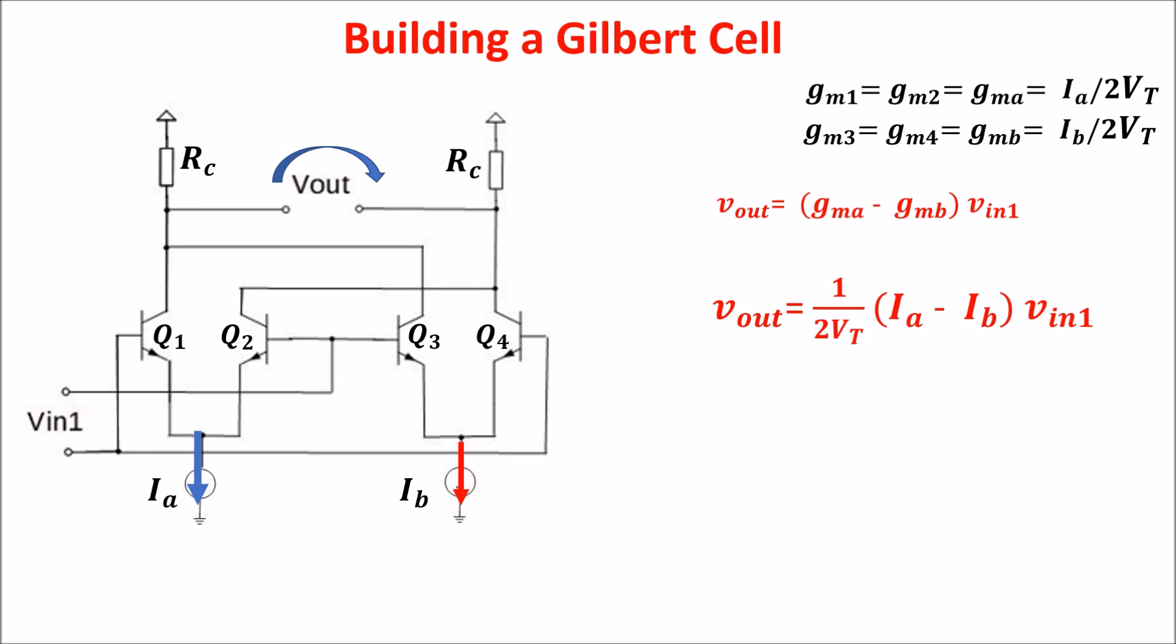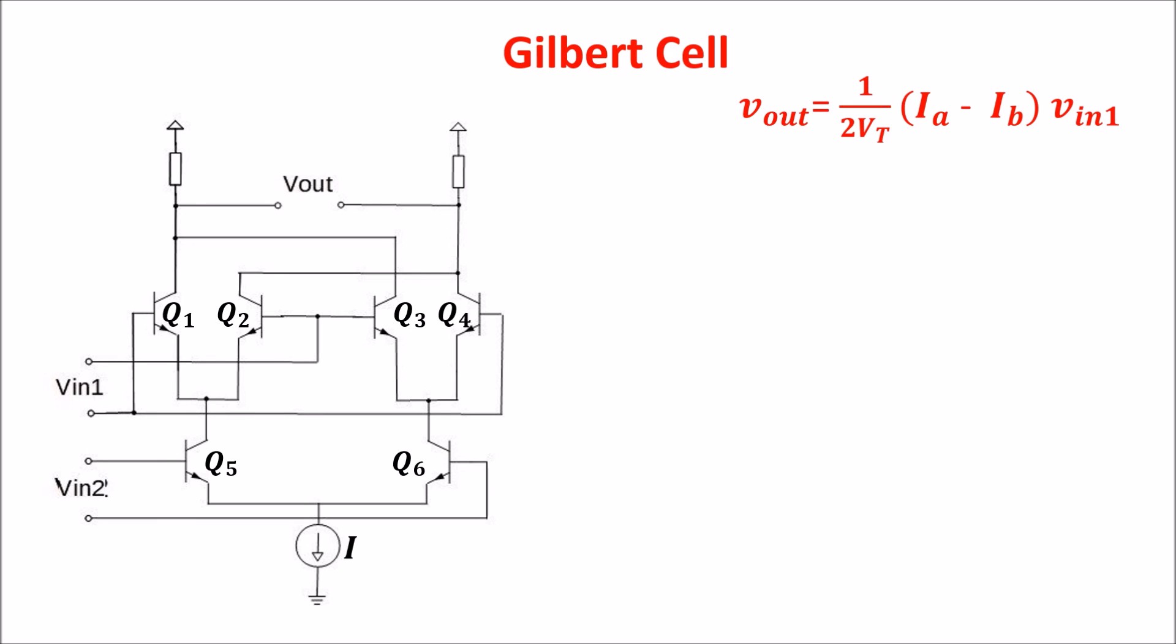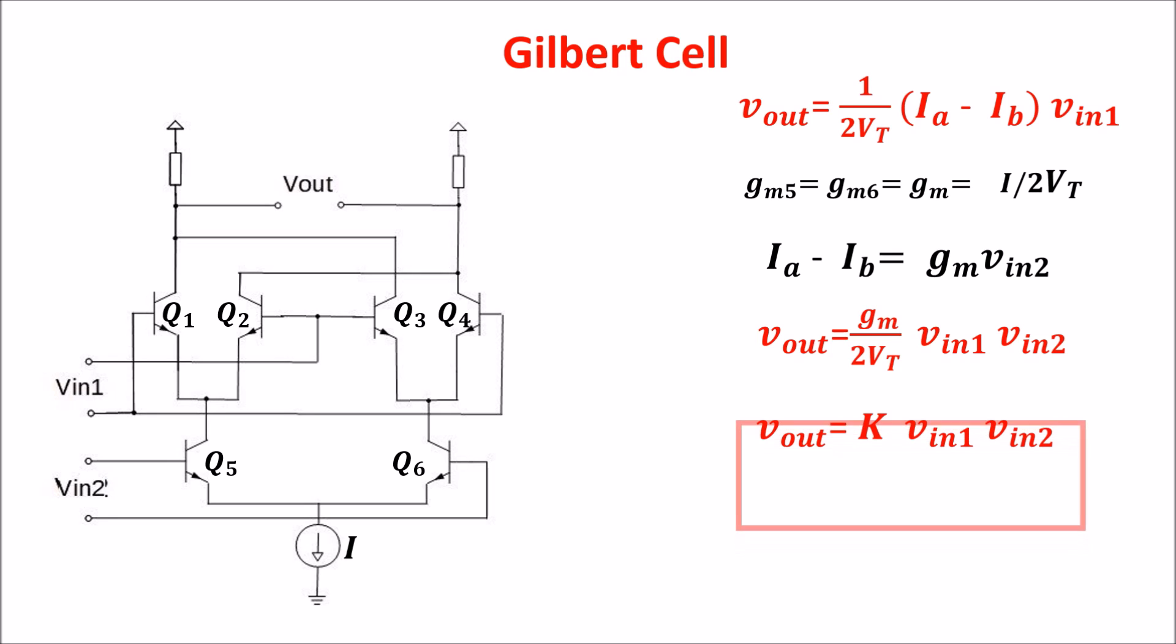Now we want to control Ia and Ib by means of a voltage, and this can be achieved with another differential amplifier. This is the final cell where we add Q5 and Q6 in a differential amplifier configuration. We have only one tail current I, and if Q5 and Q6 are matched, Gm5 equals Gm6 equals Gm, which depends on the tail current I. Now the difference of the two currents Ia and Ib can be replaced with the difference of the current flowing in the two branches of the differential amplifier Q5 and Q6, and this is simply Gm times Vin2. The ultimate formula is this, and you see that the output voltage is proportional to both the input voltages. We obtained the product of two input signals as we wanted.